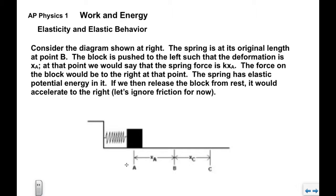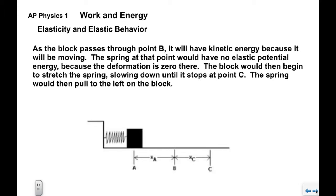If we were to release the block from rest, the spring would push it to the right, and the block would gain some kinetic energy. We'll ignore friction for the time being. As the block would pass through point B, it would have kinetic energy because it would be moving. The spring at that point would have no elastic potential energy because the deformation is zero there. It would also not be exerting any force on the block at all.